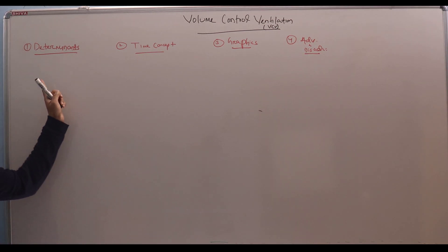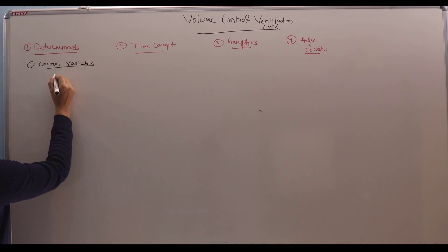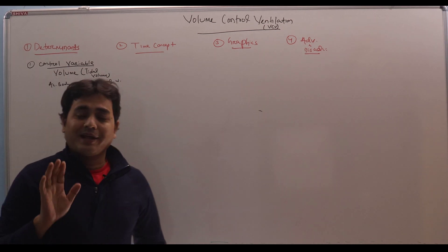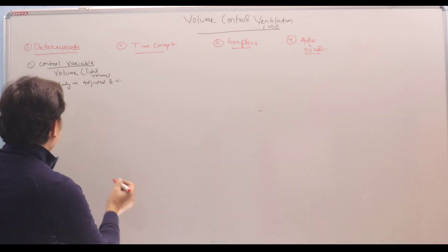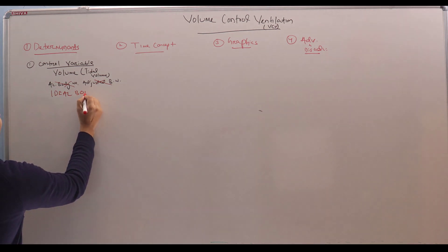First coming to the Determinants section, it will be divided into three parts. One will be control variable. As the name suggests, volume is our control variable. Now how to calculate this volume? It is also called tidal volume. Whether it is actual body weight or adjusted body weight? No. It is not actual body weight. It is not adjusted body weight. It is ideal body weight.